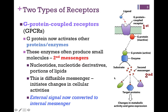Think of these second messengers as a bicycle messenger. It's going to pick up its message at the home office — that's where the membrane is — but it has to deliver that message to some other location, and that's why it has to be able to move. It has to be diffusible. It's going to initiate some change in a cellular activity. When we've created that second messenger, we have now converted our external signal to an internal signal or messenger.